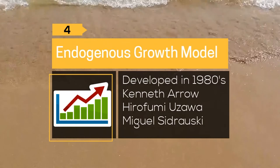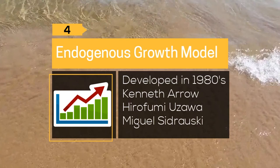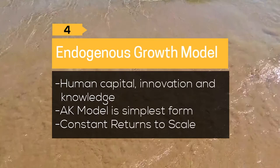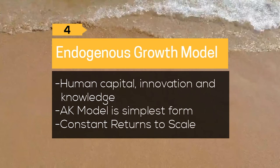The endogenous growth model was developed by a group of growth theorists in the 1980s. The work of Kenneth Arrow, Hirofumi Uzawa, and Miguel Sidrauski formed the basis for this research. According to this model, human capital, innovation, and knowledge are the significant contributors to economic growth. The AK model is the simplest form of the endogenous model.